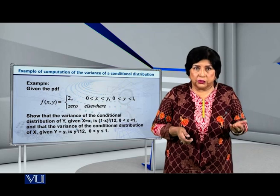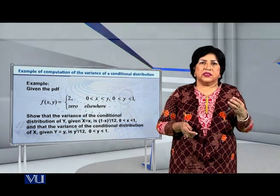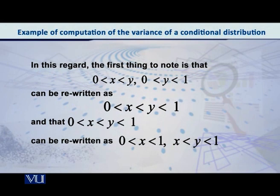How will we proceed? The very first thing to note is that this rather complicated support or domain of this bivariate density function, which is written in two parts, can be rewritten as 0 < x < y < 1. And this one expression can be split again into two portions but not the same as what it was before. We can also write it as x < y < 1 and 0 < x < 1. If you draw the graph of this domain you will find that it is easier for you to understand all these points.